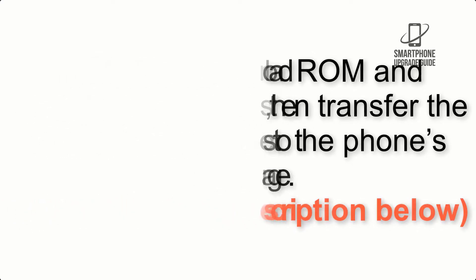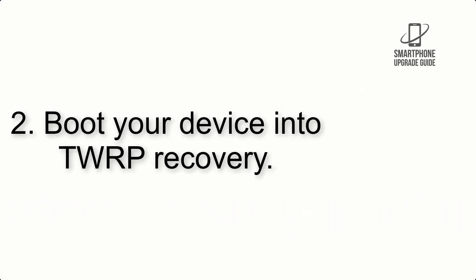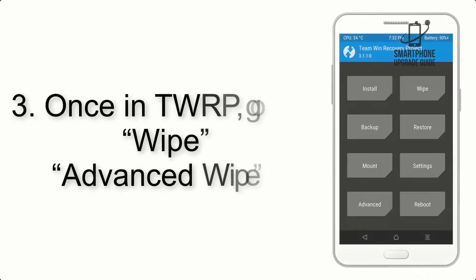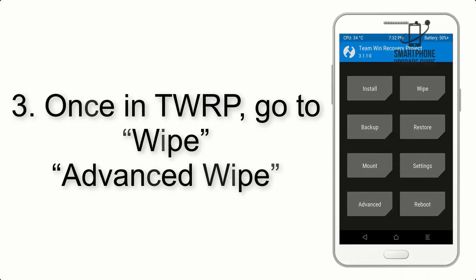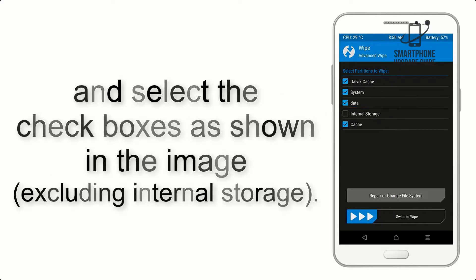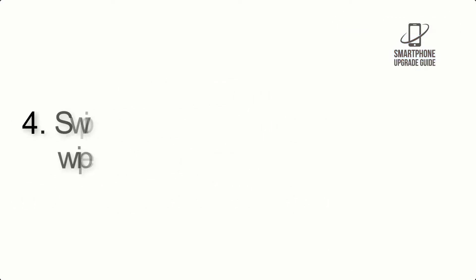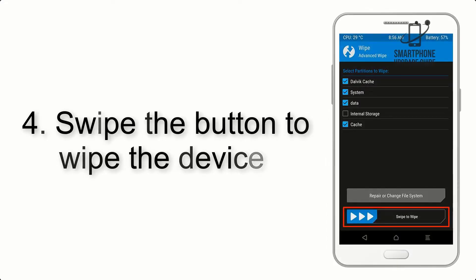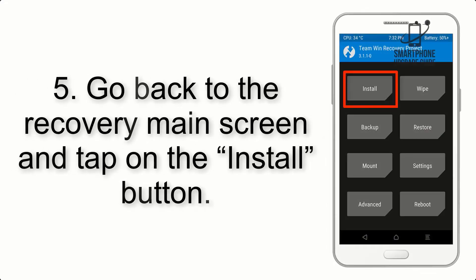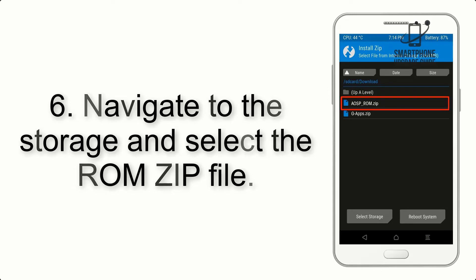Step 2: Boot your device into TWRP recovery. Once in TWRP, click on Advanced Wipe and select the checkboxes as shown in the image, excluding internal storage. Step 4: Swipe the button to wipe the device.